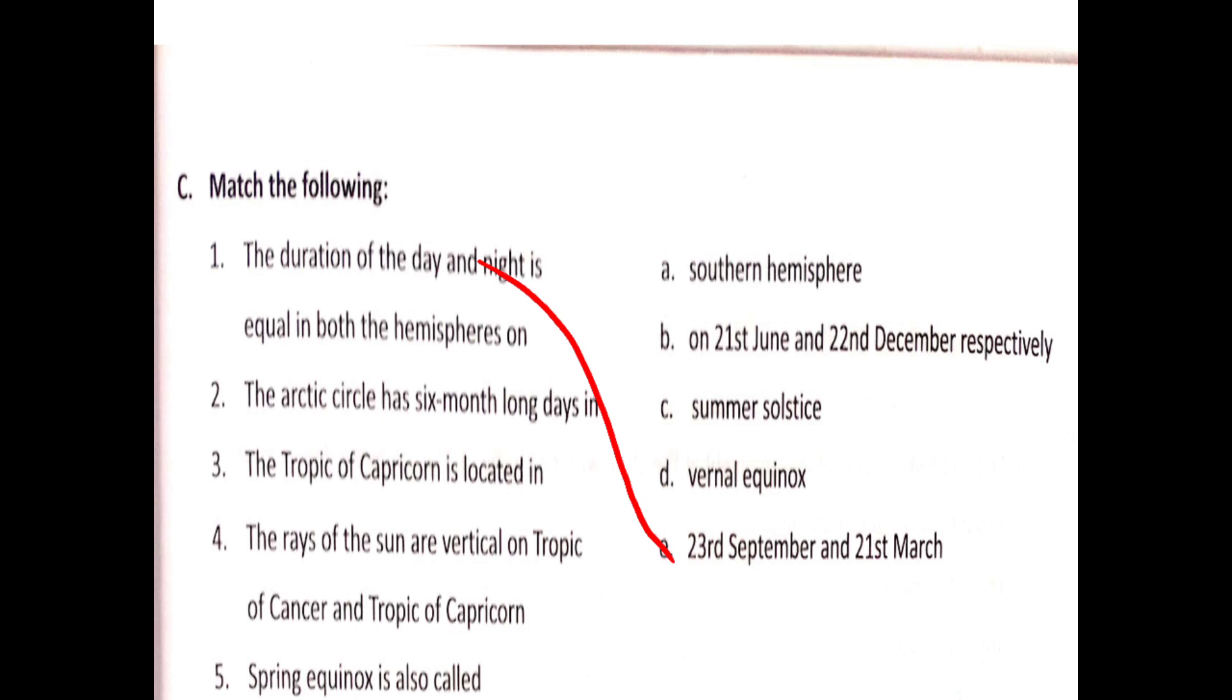Question 2: The Arctic Circle has a 6 month long day in summer solstice. The Tropic of Capricorn is located in the southern hemisphere.